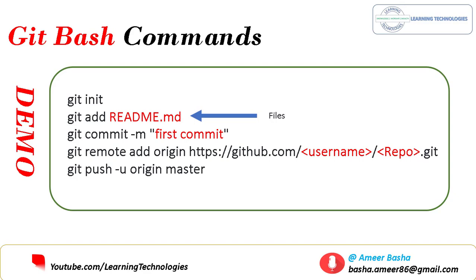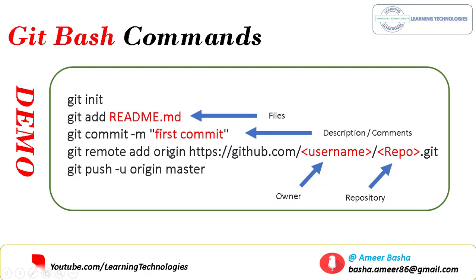The main command is 'git remote add origin' with the HTTPS URL of your GitHub repository. This connects your local repository to the remote GitHub repository. Then you push with 'git push -u origin master' to push your local files to the master branch on GitHub.